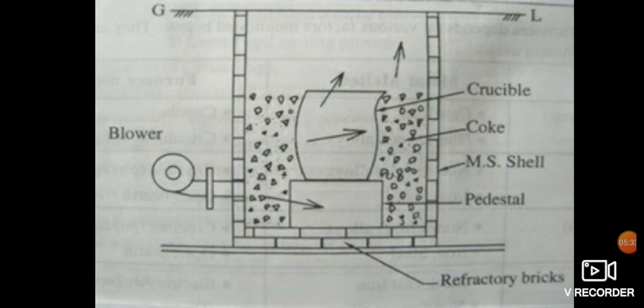Coke fired pit furnace is primarily used for non-ferrous metals. The furnace is of a cylindrical shape, also known as a pit furnace. The preparation involves making a deep bed of coke in the furnace, burning the coke until it attains the state of maximum combustion, inserting the crucible in the coke bed, and removing the crucible when the melt reaches the desired temperature.